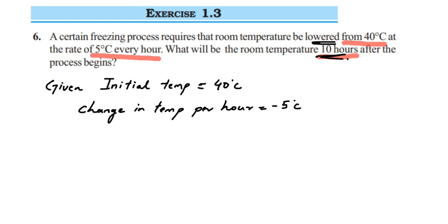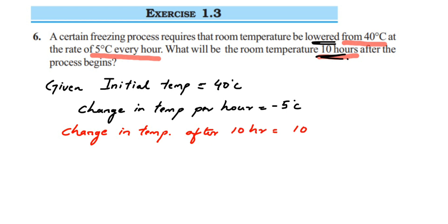Let us find out the temperature after 10 hours. Since they are decreasing for 10 hours, we are going to simply multiply minus 5 and 10. Instead of subtracting 5 degrees Celsius ten separate times, which would be time consuming, we just multiply 10 and minus 5. So it will be minus 50 degrees Celsius.